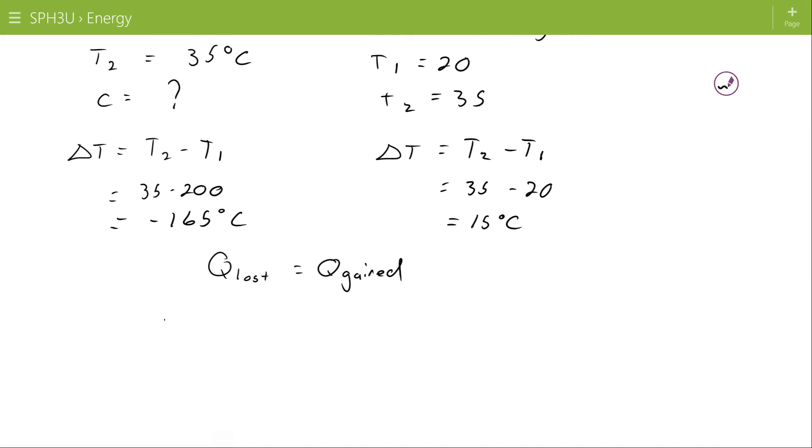So for the Q lost, we'll use negative mc delta T to reflect the fact that we know that the energy is coming out of that system. And for the Q gained, we use positive mc delta T. This is my metal and my water.